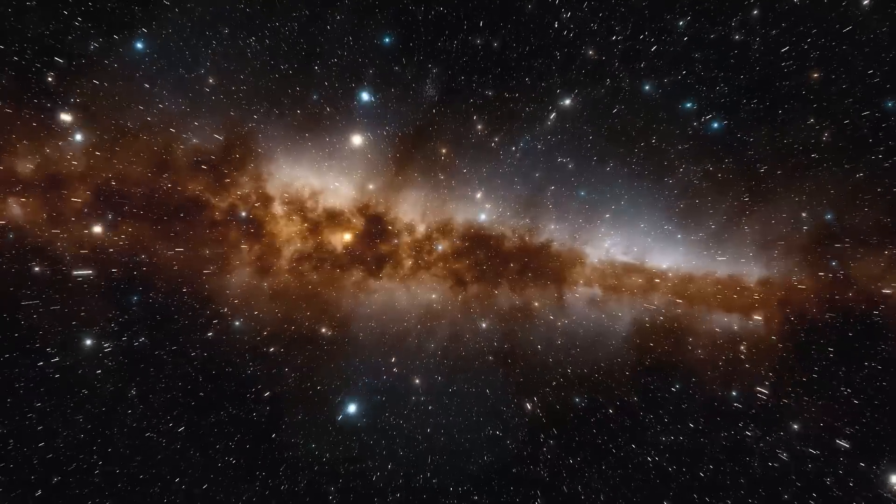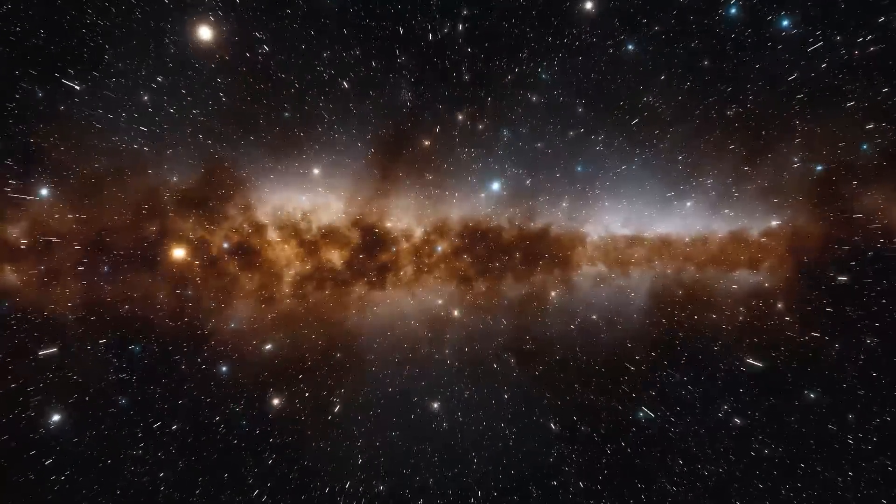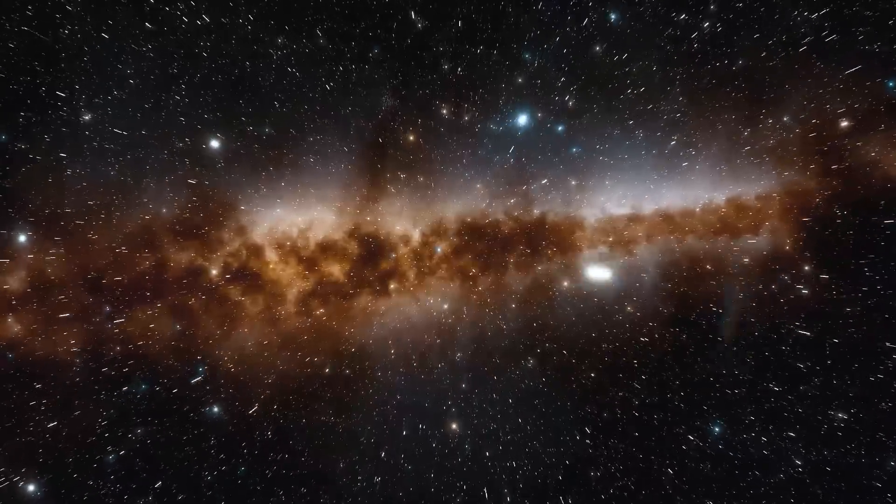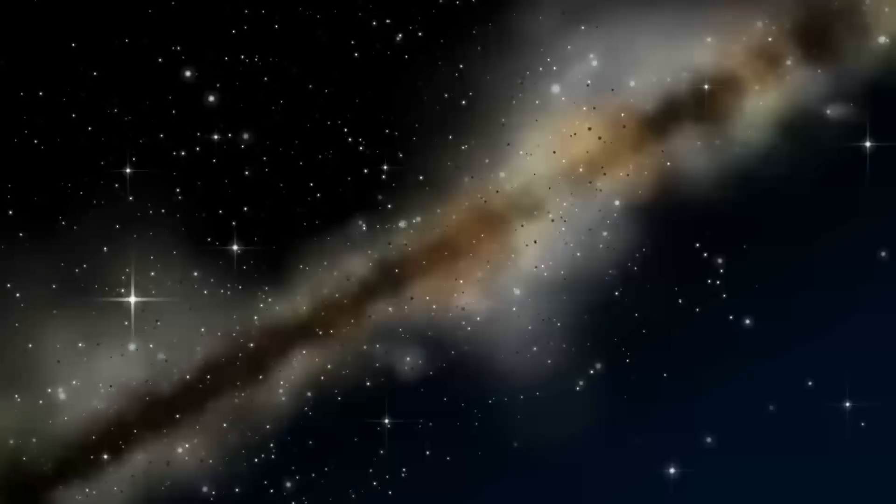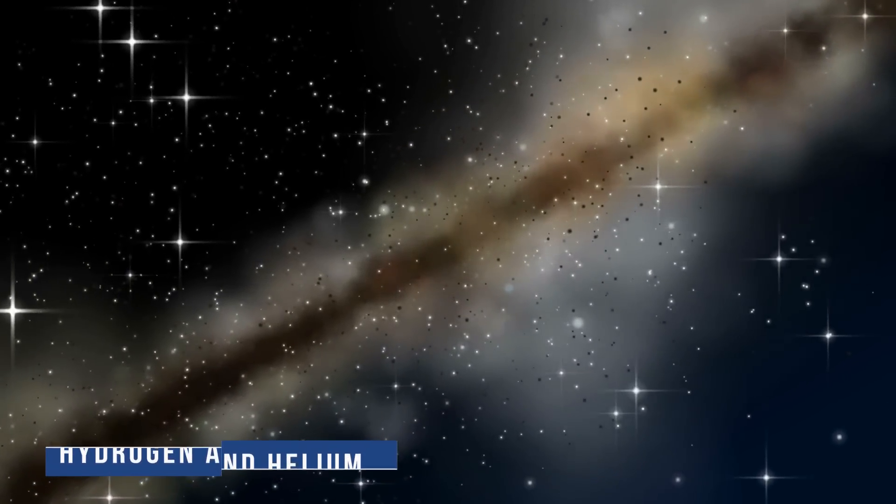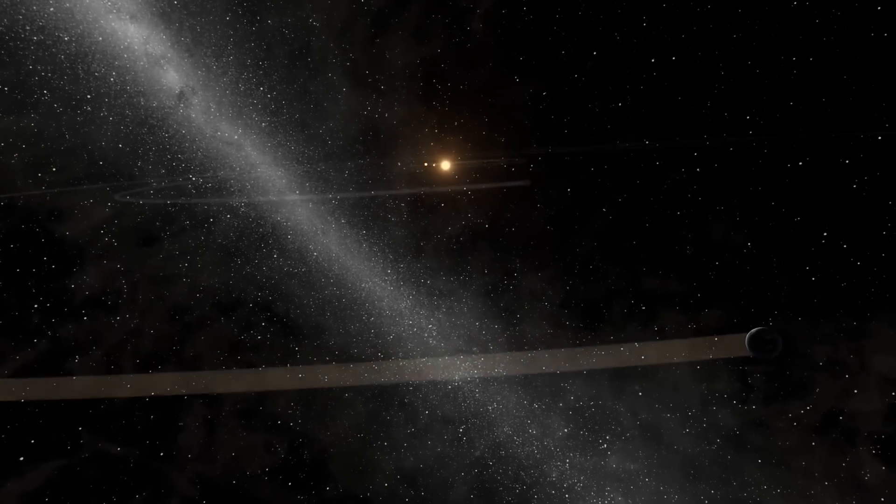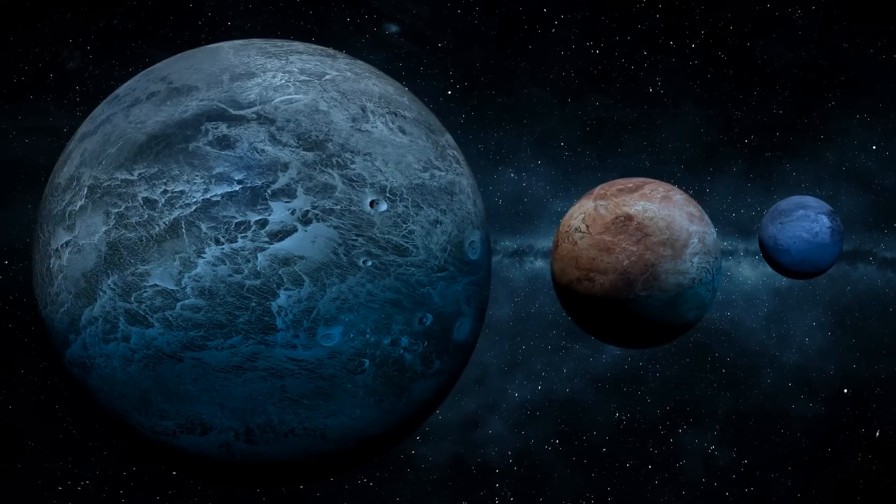Earendel might be a population 3 star, but the odds are quite low. Theoretical population 3 stars are a class of massive, hot, and bright stars thought to have formed in the early universe. Almost no metals were present in these stellar objects. Primordial hydrogen and helium made up nearly all of their makeup. They may have been the first to produce elements heavier than hydrogen, which are necessary for planets to form.